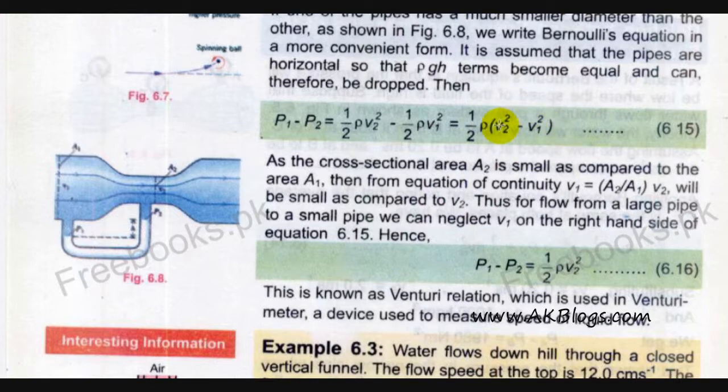Thus for flow from a large pipe to a small pipe we will neglect v1 on the right hand side of the equation. Hence now we have the relation.